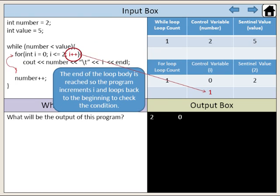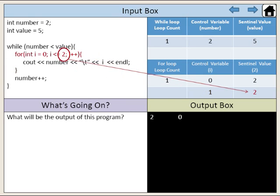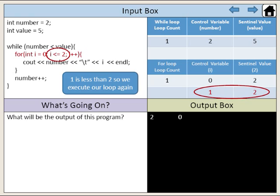The end of the loop body is reached, so the program increments i and loops back to the beginning to check the condition. Our sentinel value is 2. 1 is less than 2, so we execute our loop again.